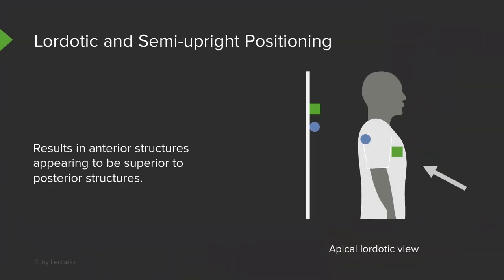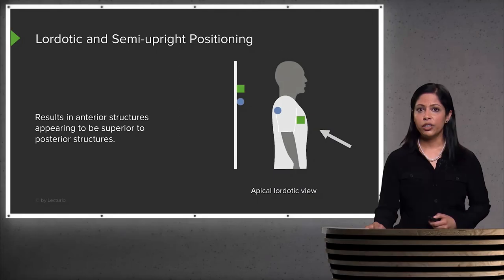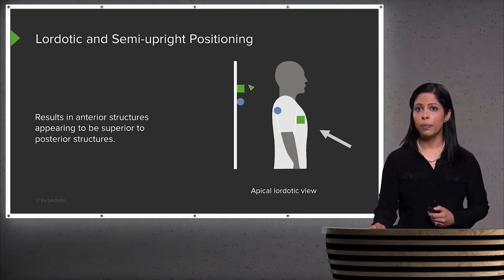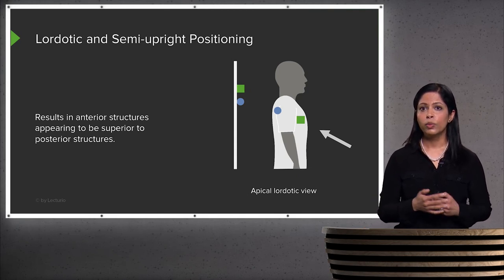Lordotic or semi-upright positioning is performed when a patient is unable to fully sit up straight or stand. The patient lies on their back with the detector behind them and the x-ray beam coming in, either with the patient sitting slightly upright or the beam slightly angled. This is an AP projection. Importantly, in the lordotic position, anterior structures appear superior to posterior structures on the image — so a square representing an anterior structure appears higher than a circle representing a posterior structure, even though anatomically the circle is higher.